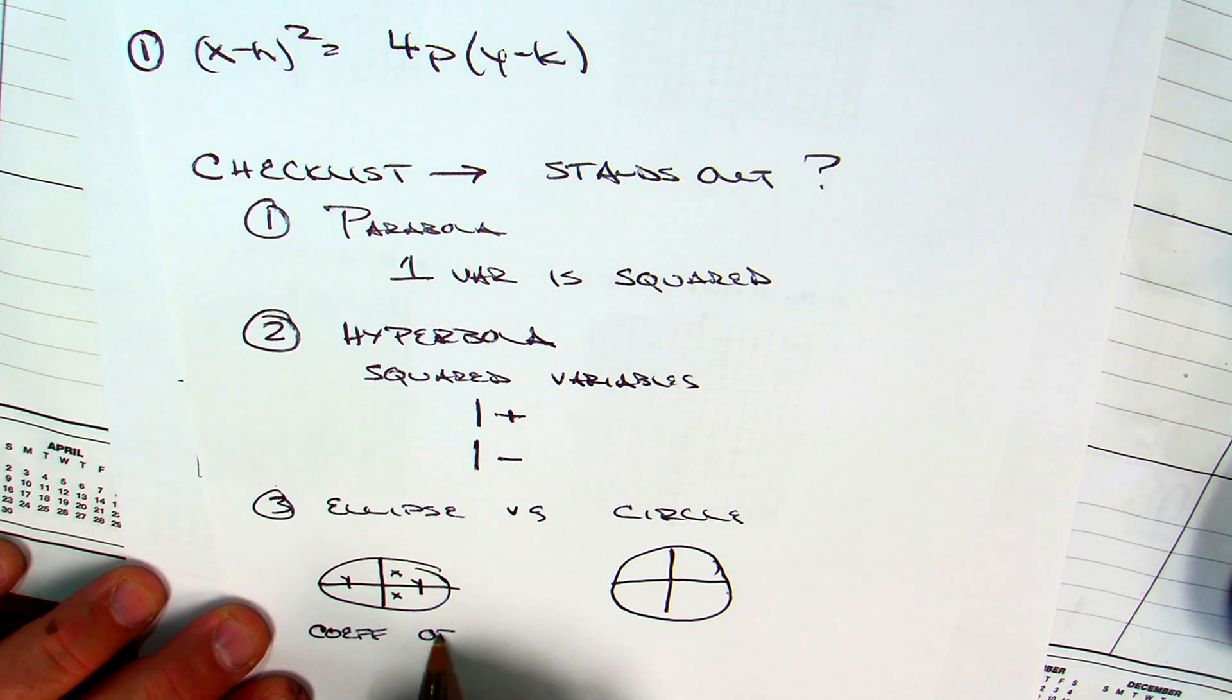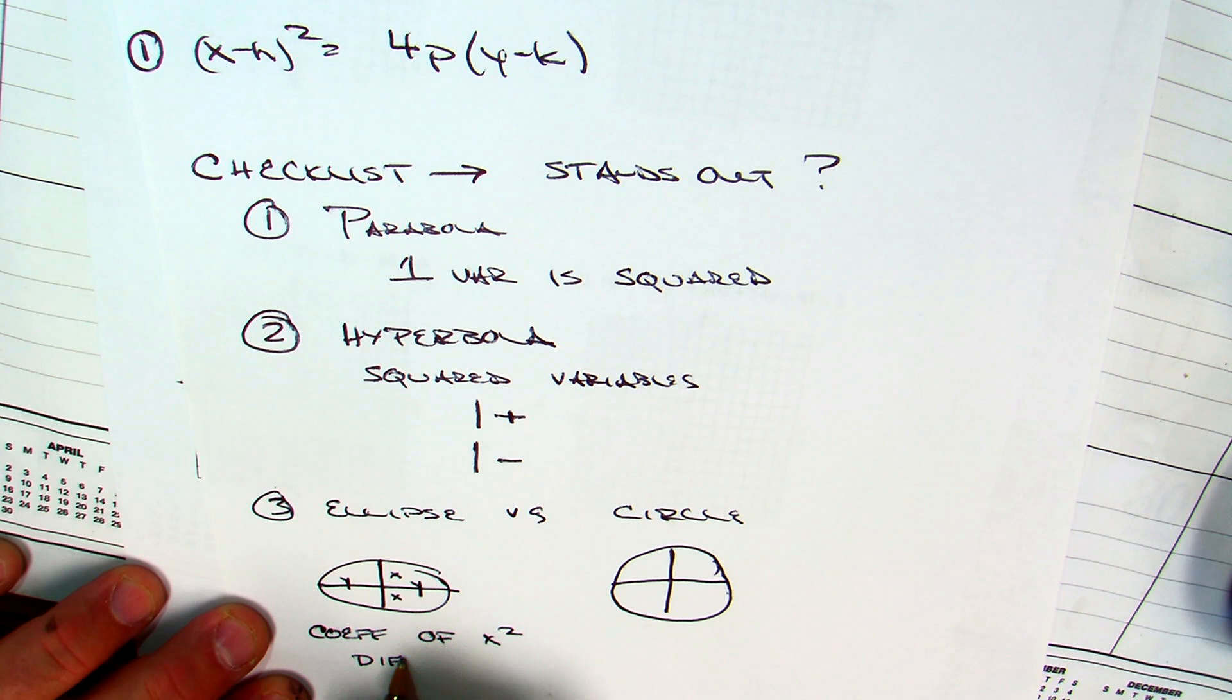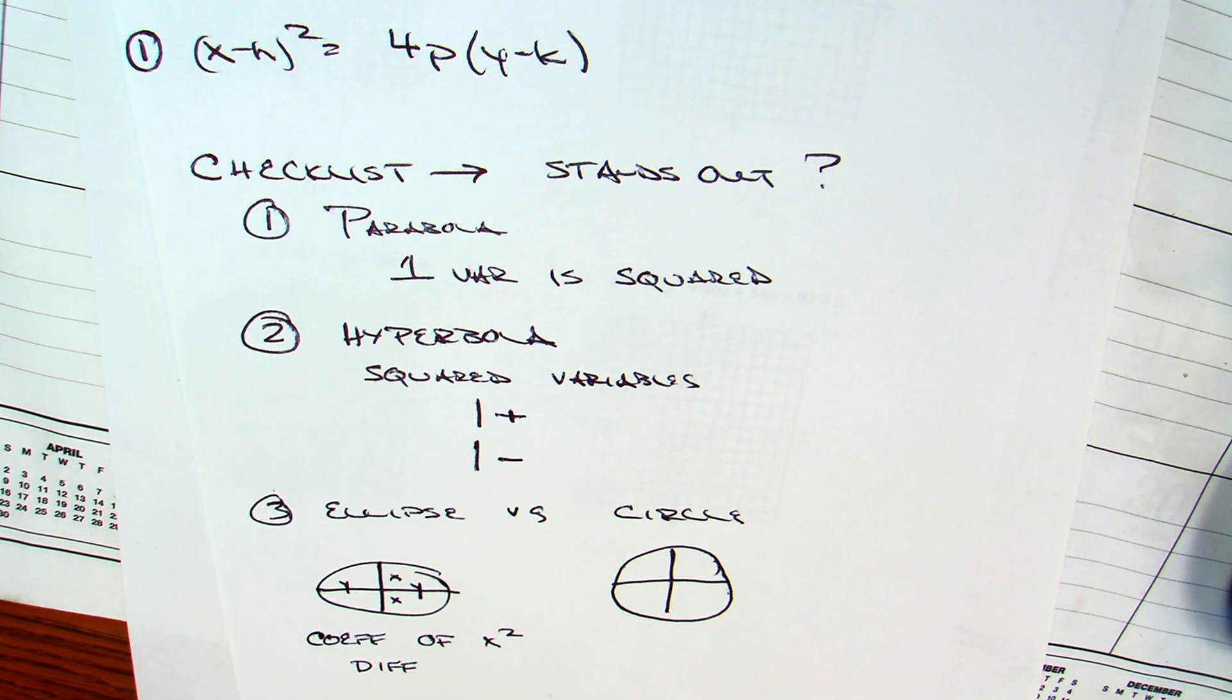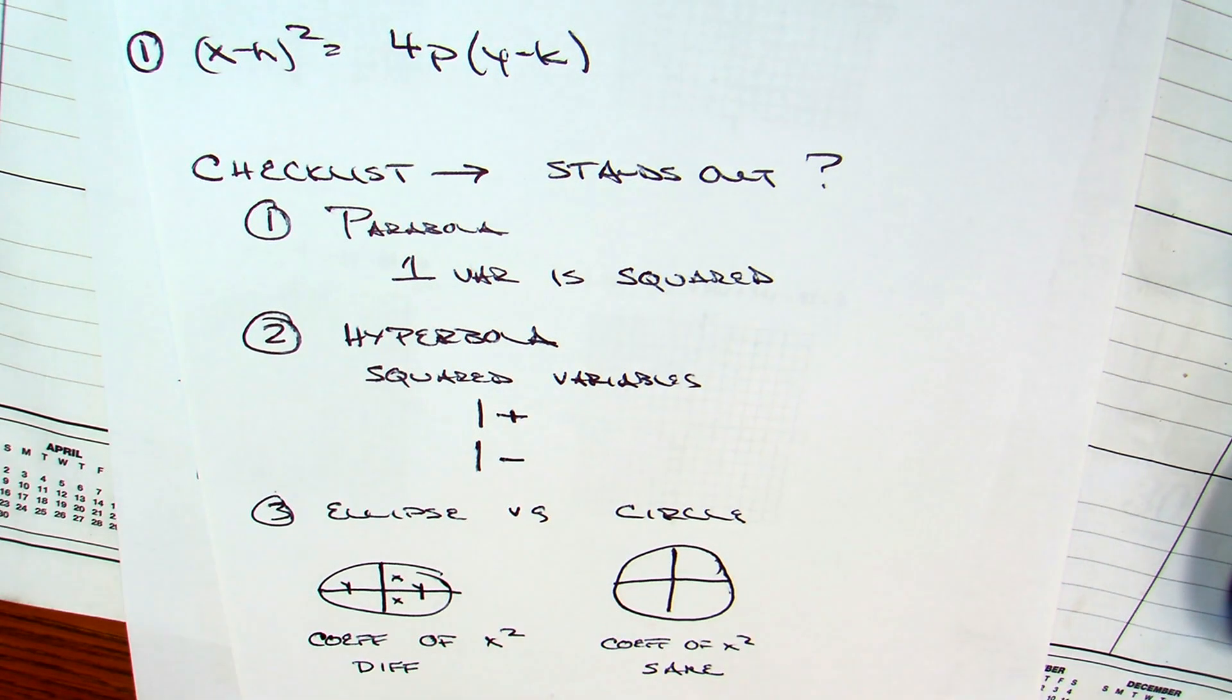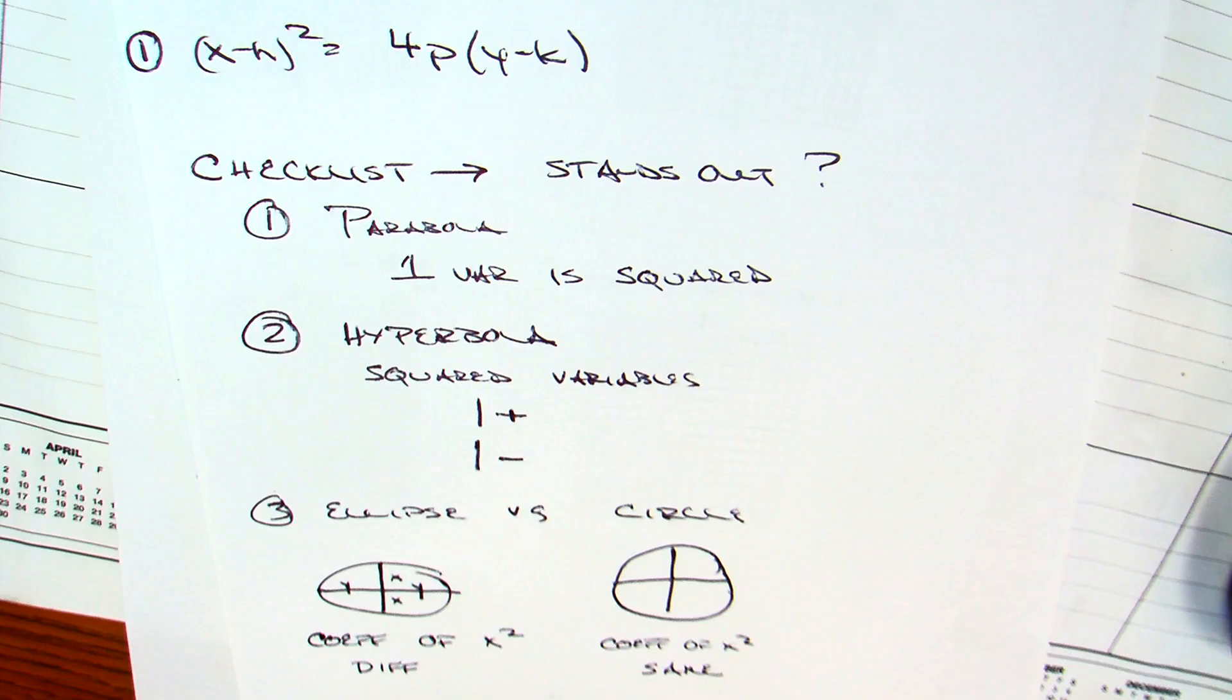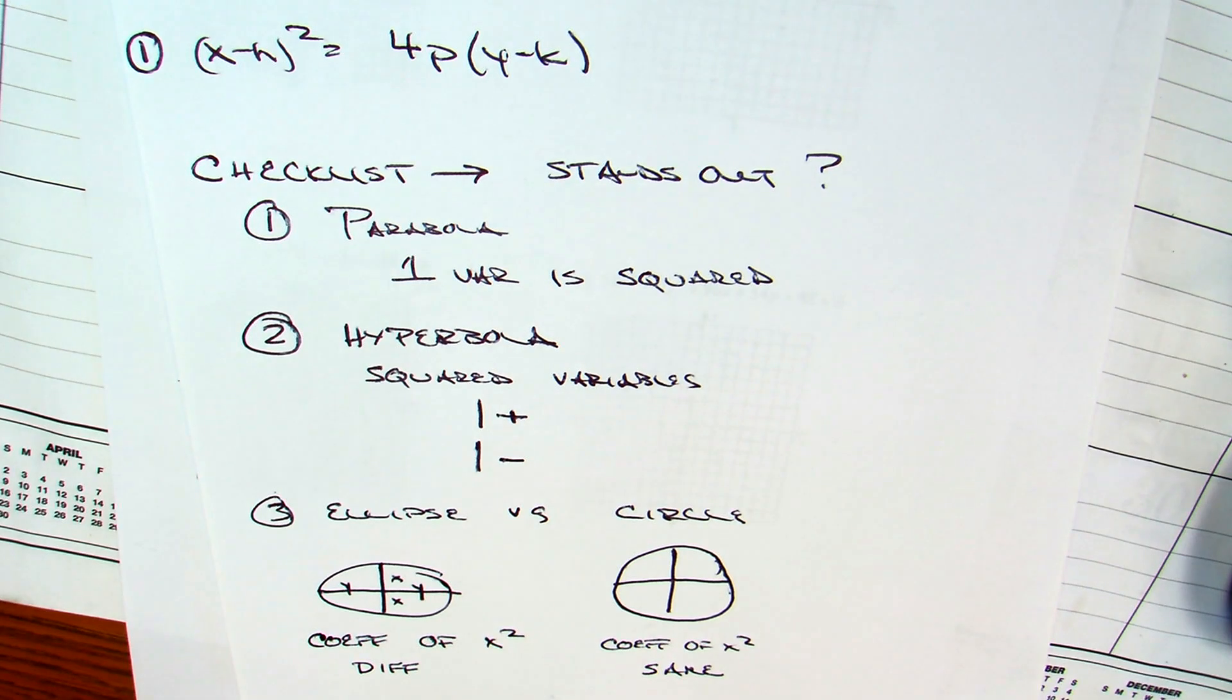Well, what we're going to learn today is the coefficient of the squared variables are different. But for a circle, the coefficients of the squared is going to be the same. That's how you distinguish them. That is the checklist I would go through when you face this situation next Friday. This will be the last question on your topic. Identify which one is which.